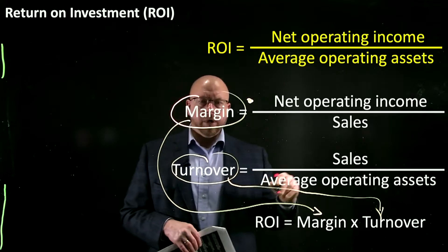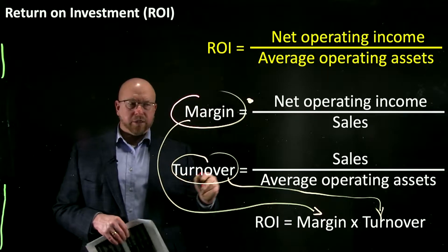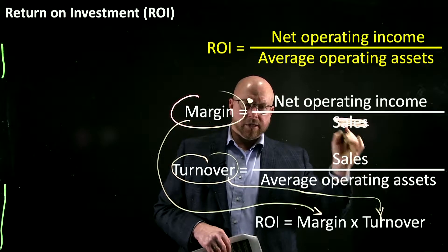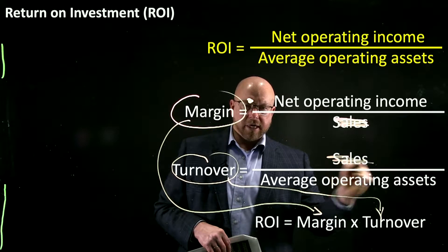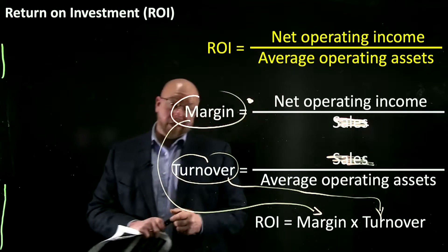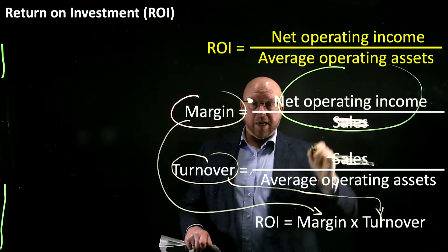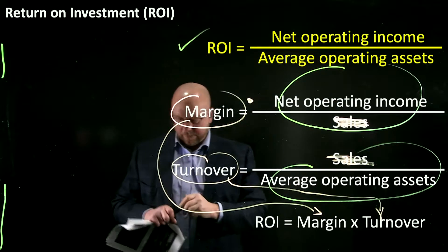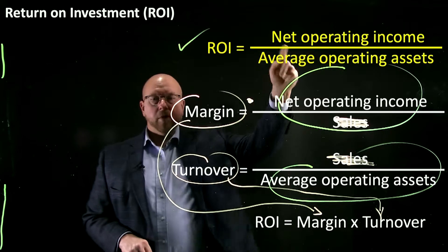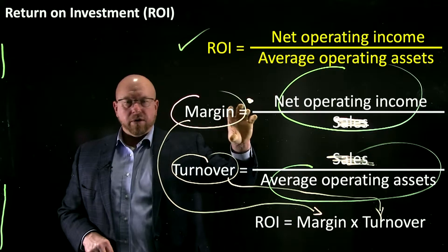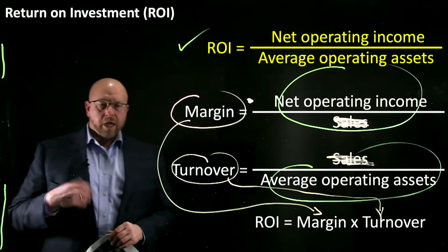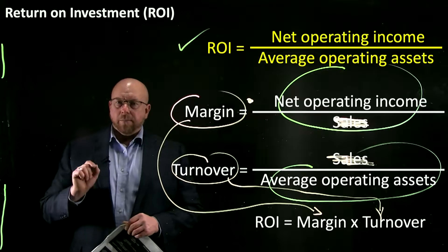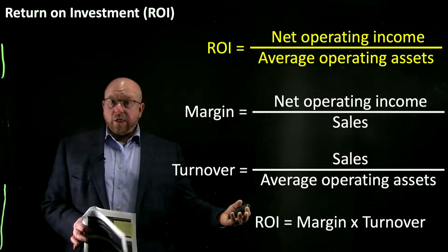If you take margin multiplied by turnover, what you're effectively doing is canceling out the sales in the denominator and the sales in the numerator, and at the end of the day you've got net operating income divided by average operating assets — exactly the original formula. So whether you calculate it directly or figure out margin and turnover separately and multiply them, either way you get to ROI. And with ROI, bigger is better.